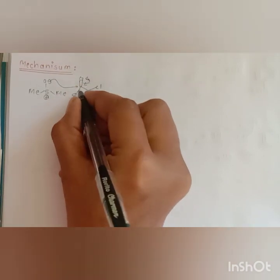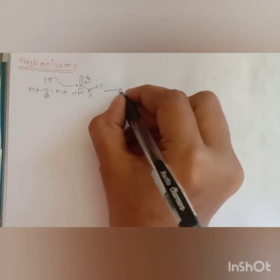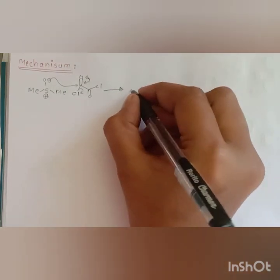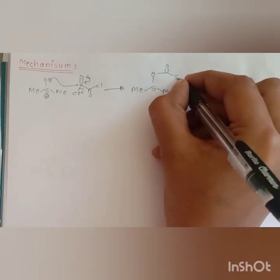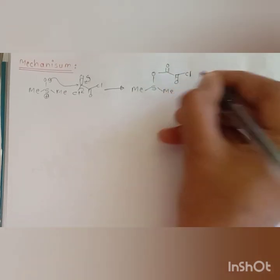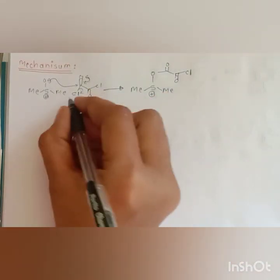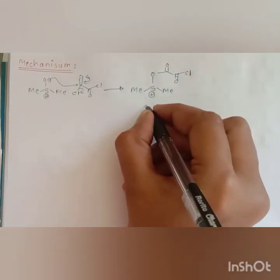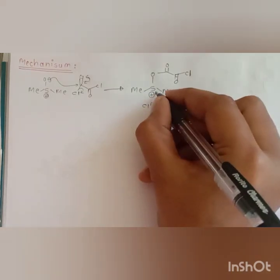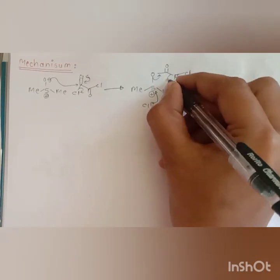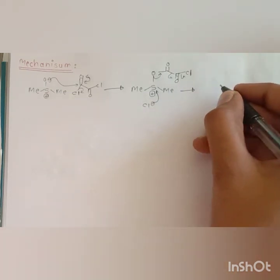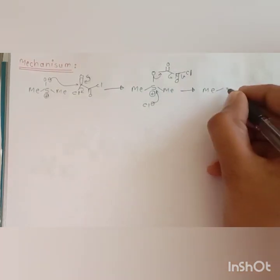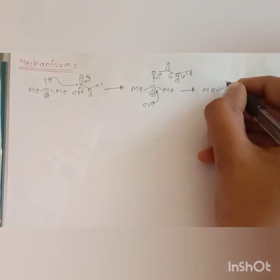Elimination of Cl minus takes place and we get the intermediate. Now this Cl minus attacks on this electrophilic sulfur and elimination of carbon dioxide as well as carbon monoxide takes place to give the electrophilic dimethyl sulfonium chloride.